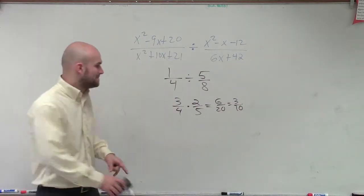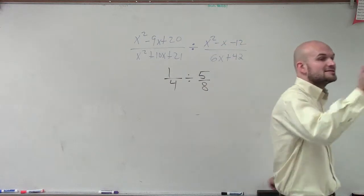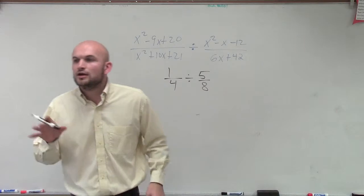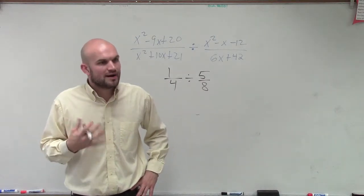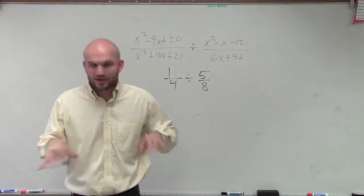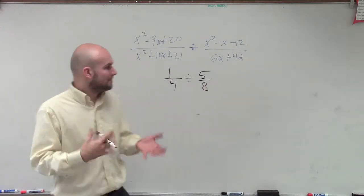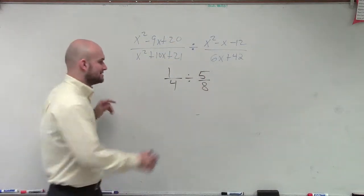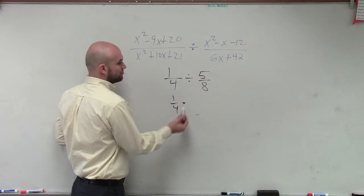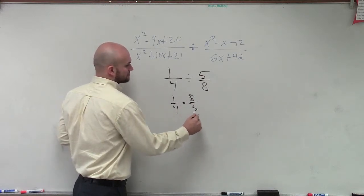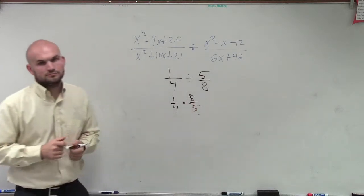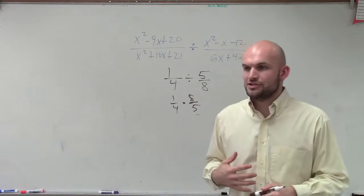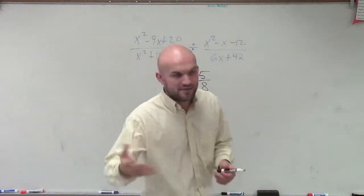Does anybody remember what happens when you divide? I'll say this again for students who were not able to hear that. When you divide, you can multiply by the reciprocal. We'll explain why that works in the next example, but that's exactly the case. If I have 1/4 divided by 5/8, what I can do is take 1/4 and multiply it by the reciprocal. When dividing fractions, you reciprocate the fraction you're dividing by and then multiply across.